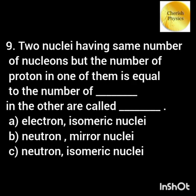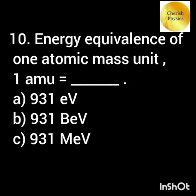Two nuclei having the same number of nucleons but the number of protons in one of them is equal to the number of neutrons in the other are called mirror nuclei. Energy equivalence of one atomic mass unit is equal to [value].